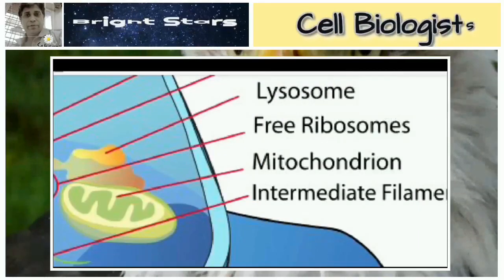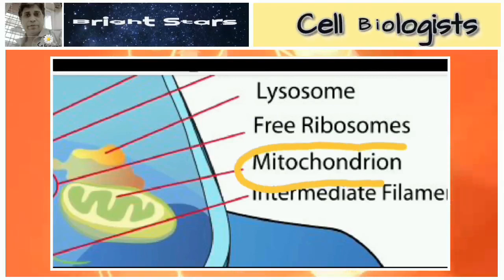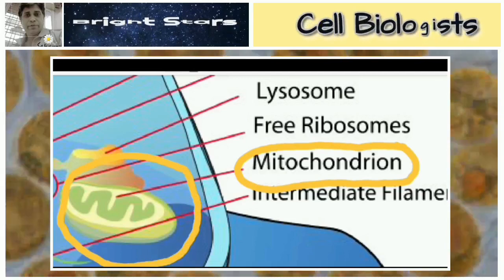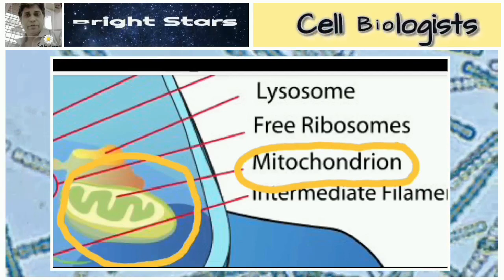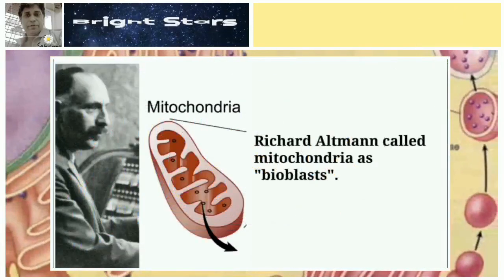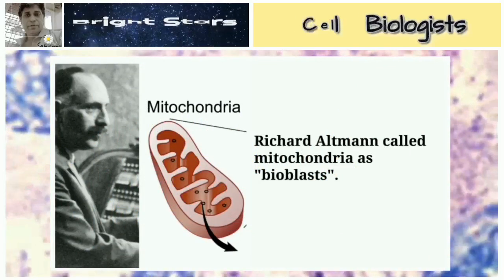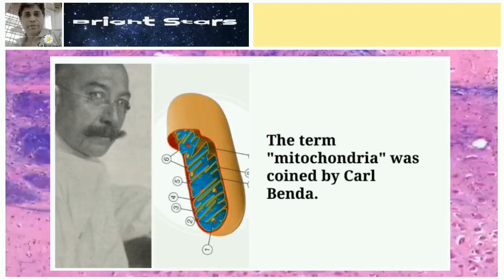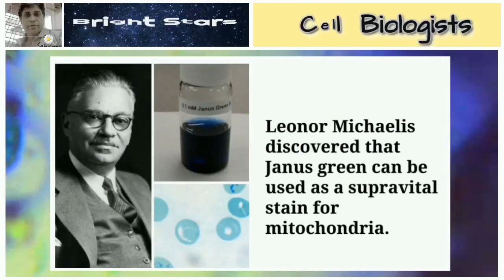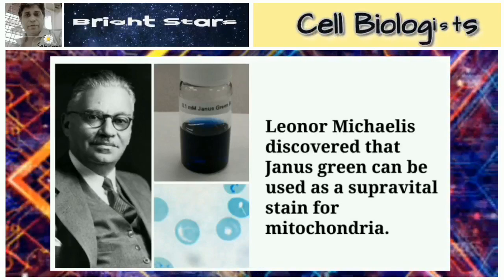The respiratory organelle of the cell is the mitochondrion (plural: mitochondria). Richard Altmann called mitochondria 'bioblasts.' The term 'mitochondria' was coined by Carl Benda. Leonard Michaelis discovered that Janus green can be used as a supra-vital stain for mitochondria.